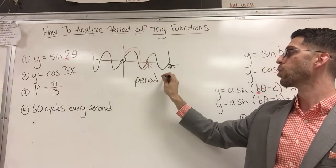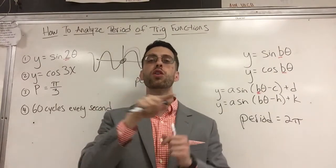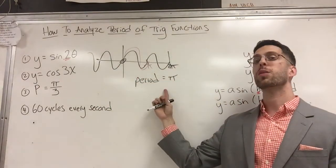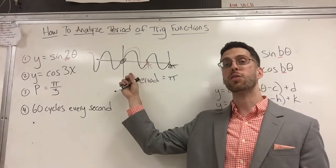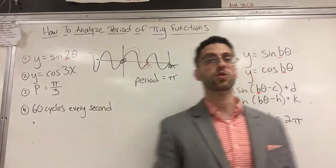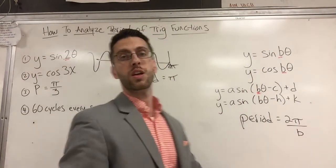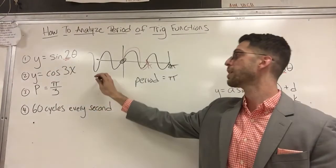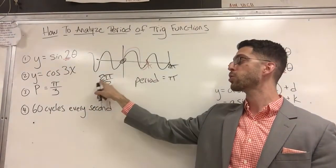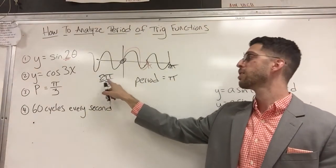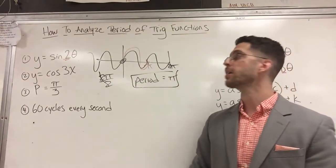If the default period is two pi and I squeeze two curves in, all of a sudden the period becomes one pi. Can you come up with a formula to figure that out without looking at the graph anymore? Yes, you just take the default period and divide by the frequency. Once I know the frequency is two, the twos will cancel out and my period will be pi.